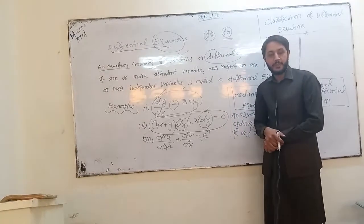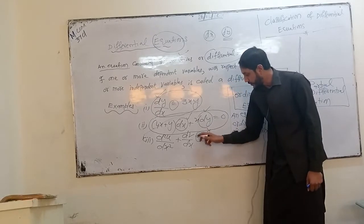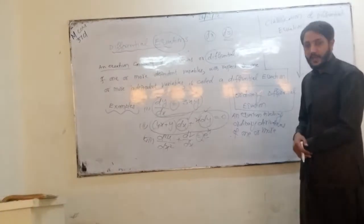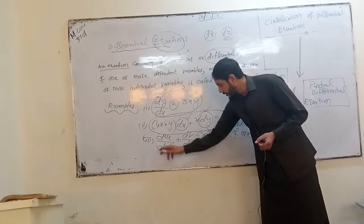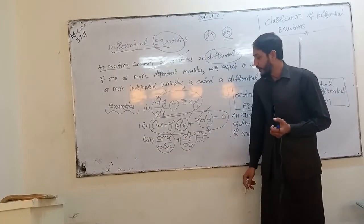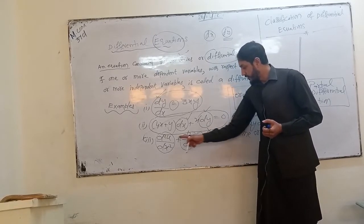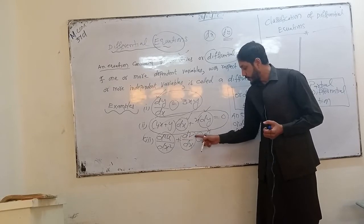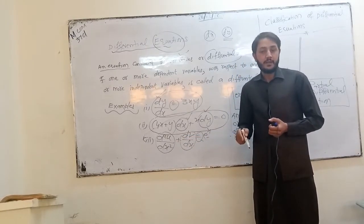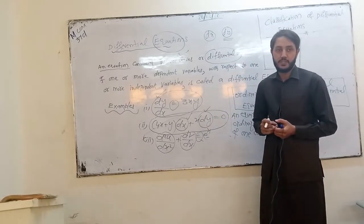There is a third example. This third example is also a differential equation. Why? Because you can see the sign of equality — so this is an equation. Secondly, it involves derivatives. You can see d²u/dx² + dv/dx = eˣ. Whenever you see derivatives in an equation, it is called a differential equation.